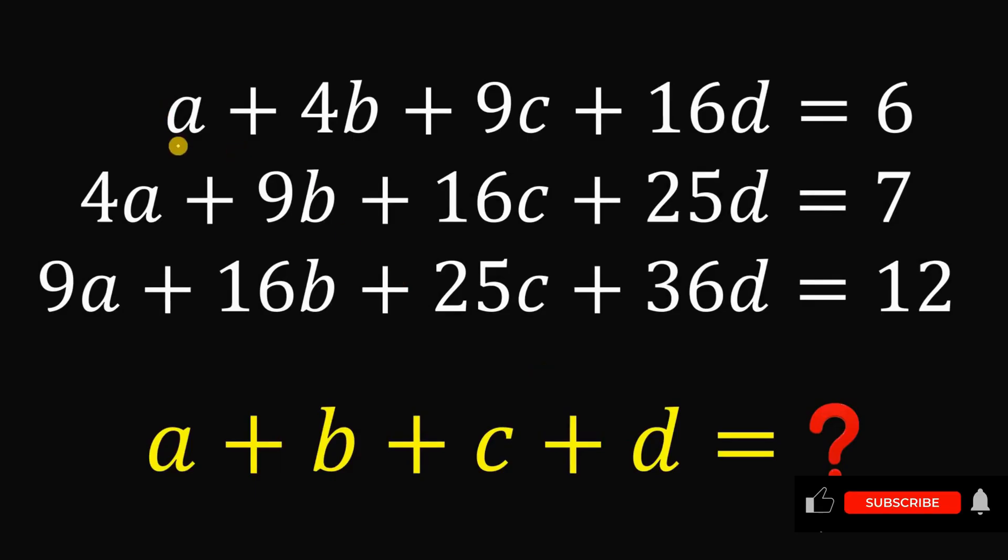Given these 3 equations with 4 unknowns: a plus 4b plus 9c plus 16d equals 6, 4a plus 9b plus 16c plus 25d equals 7, and 9a plus 16b plus 25c plus 36d equals 12. Our goal is to find the numerical value of a plus b plus c plus d.